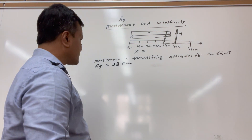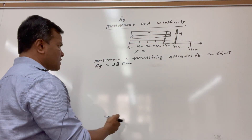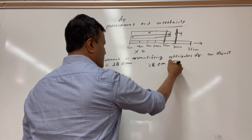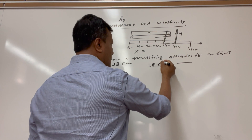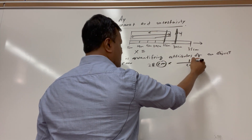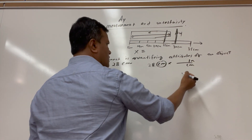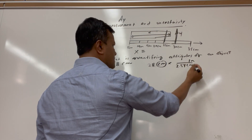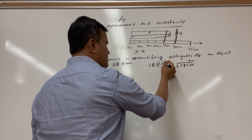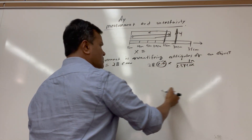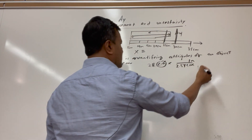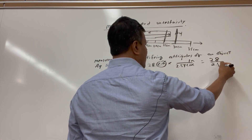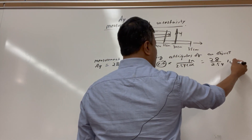28 centimeters — and I want to convert it to inches. 28 centimeters times 1 inch over 2.54 centimeters gives approximately 11.02 inches.